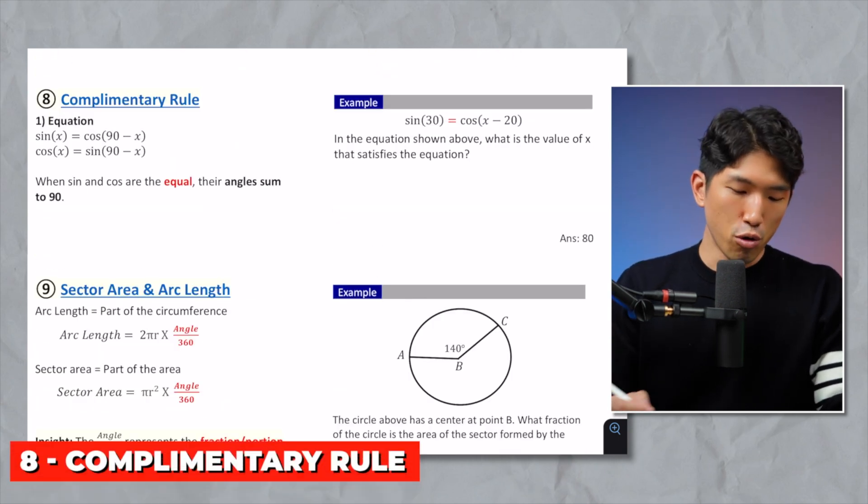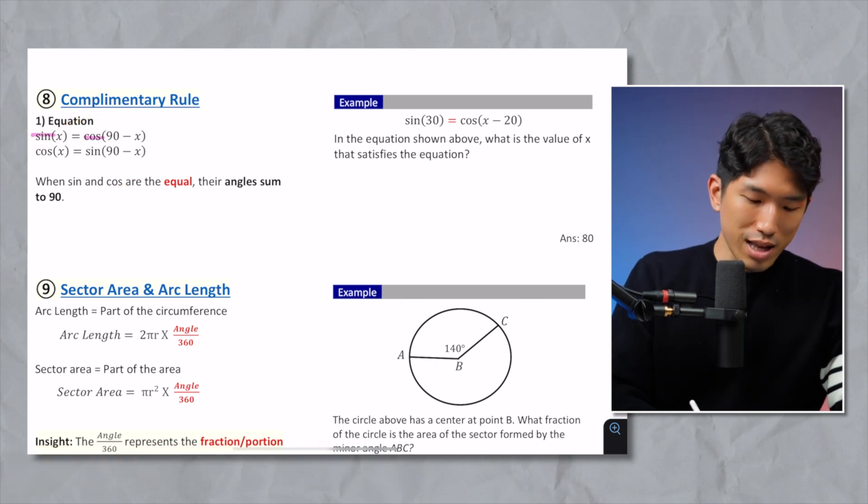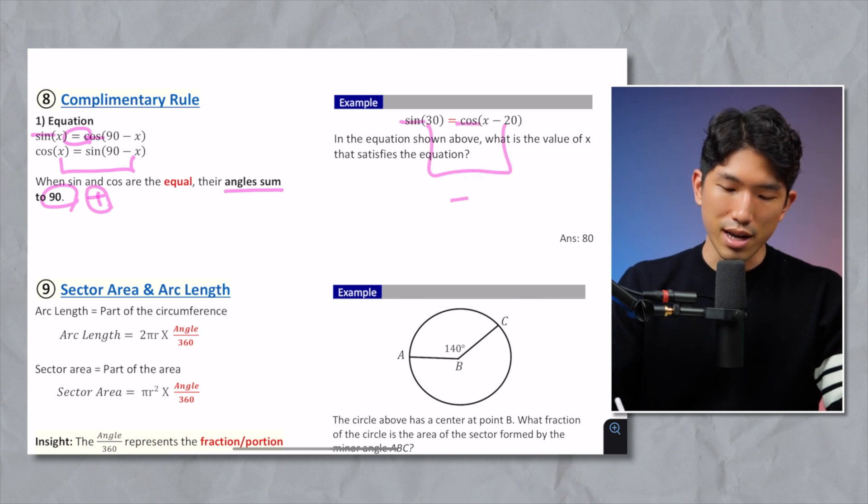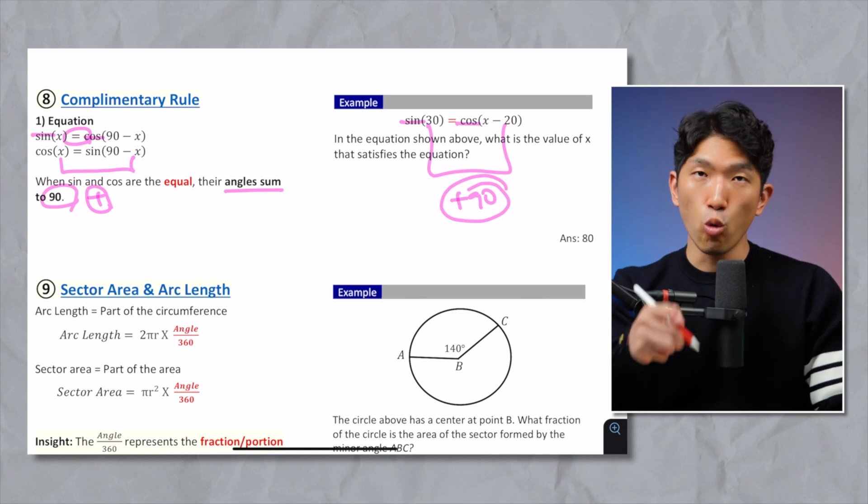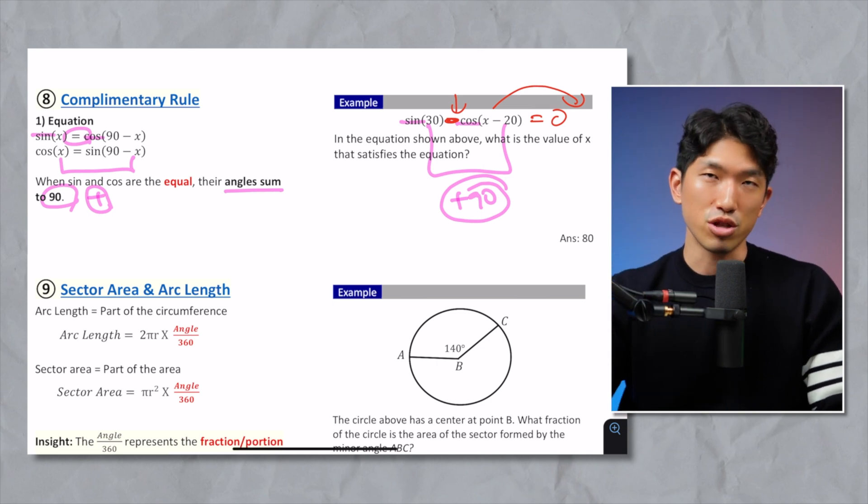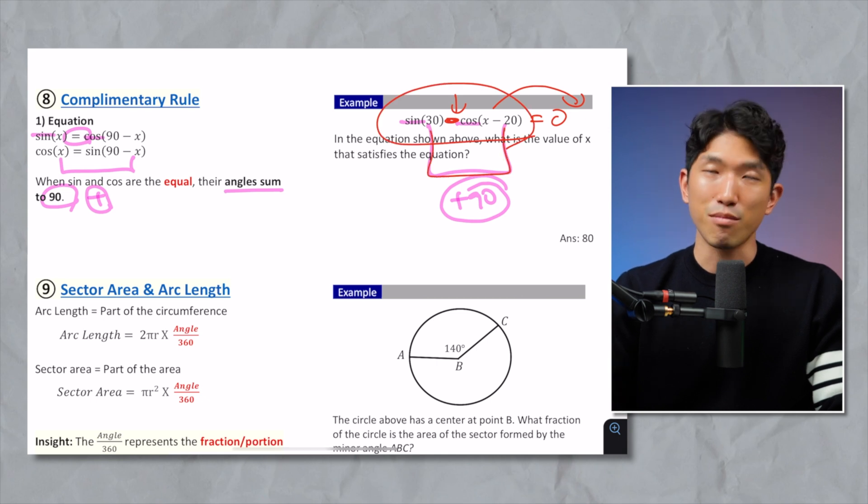Now, next thing about trig is going to be the complementary rule. You have seen this equation before, you want to have that drilled into your head. And the most important thing is when sine, cosine are set equal to each other, that means their angles sum up to 90. Sine and cosine set equal to each other, they add up to 90. That's the definition of the complementary rule. And it only works when sine and cosine are set equal to each other. If it's like sine of 30 minus cosine of x minus 20 is equal to zero, then you want to move it to the other side first, and then set them equal to each other. But SATs kind of come up with some kind of variation and you want to be prepared for it. So just do it right the first time and you will have no trouble.